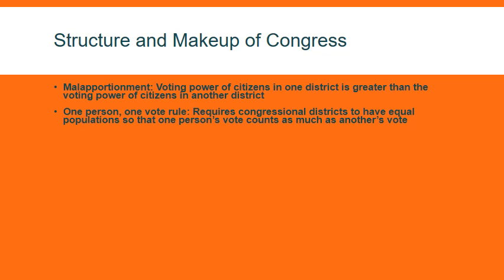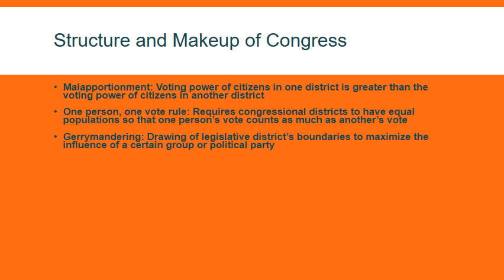The one person, one vote rule requires congressional districts to have equal populations so that one person's vote counts as much as another person's vote — roughly 750,000 people per district. Gerrymandering is the drawing of legislative district boundaries to maximize the influence of a certain group or political party.